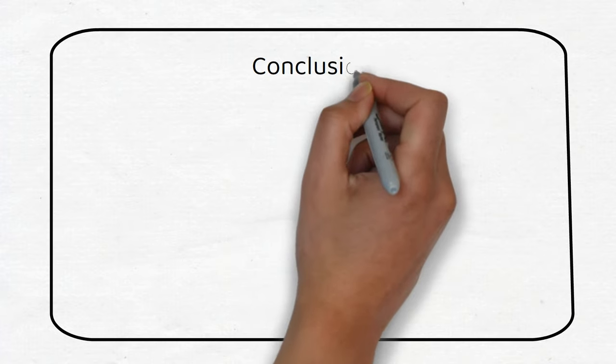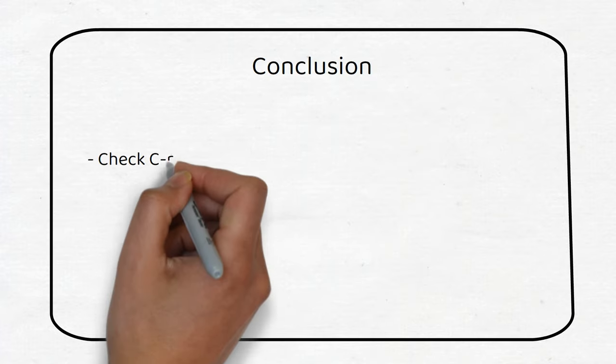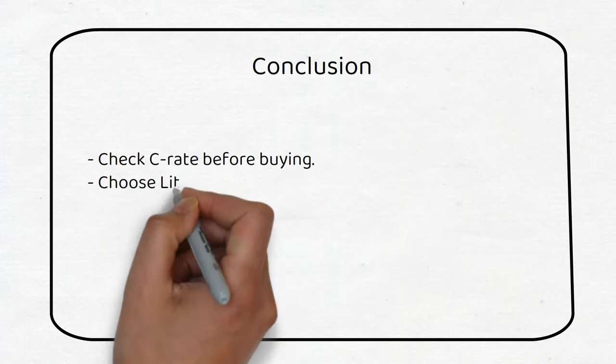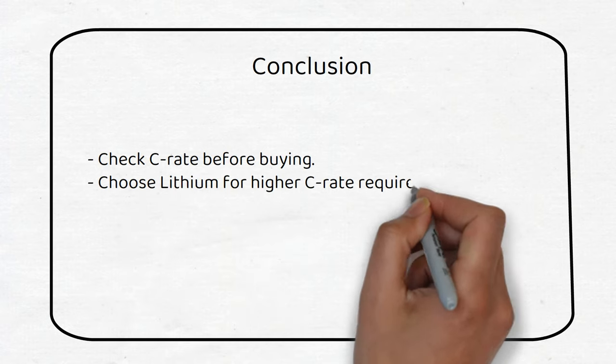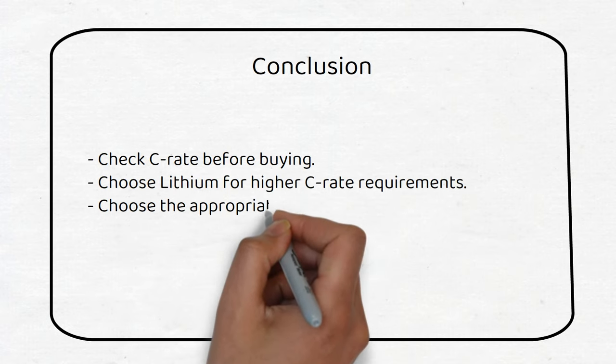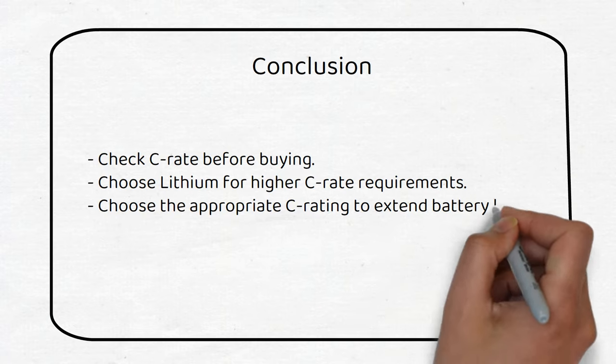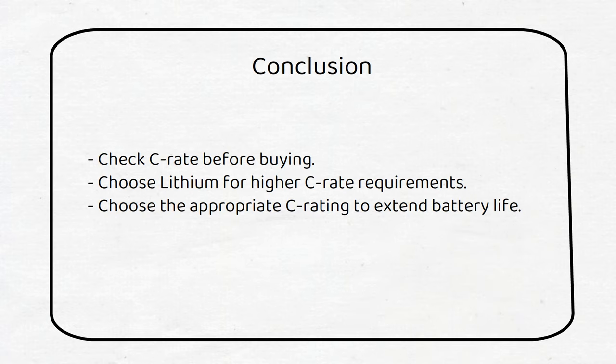Make sure you check the charge and discharge C-Rate of your batteries before buying them. Lithium has higher C-Rates than lead acid. Lithium batteries have a built-in battery management system to shut down the battery if high currents are being drawn. A lithium battery is capable of providing a surge current of 2C for a few seconds, depending on the chemistry.